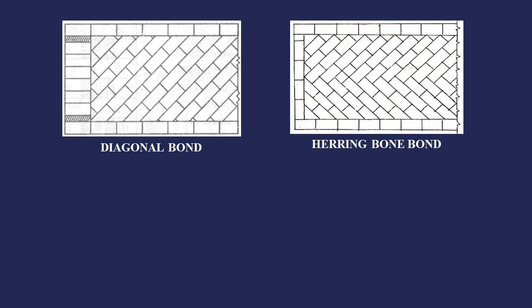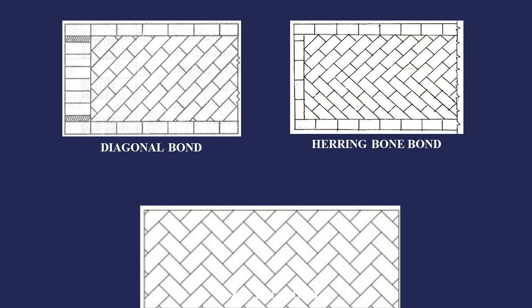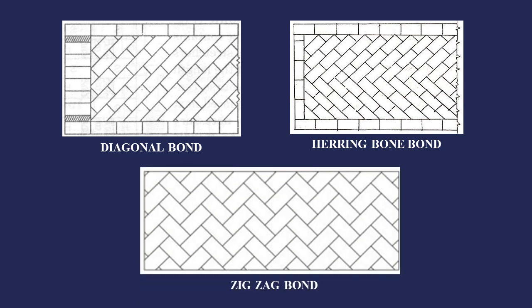A herringbone bond is arranged on two sides — bricks are inclined in two directions at the same time. A zigzag bond is based on the diagonal bond pattern, where bricks are arranged in a zigzag form.